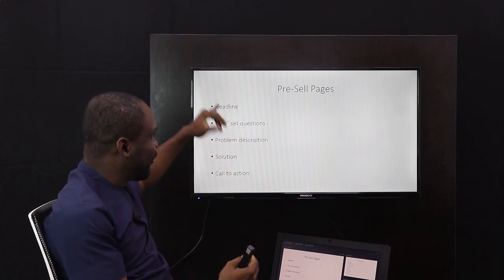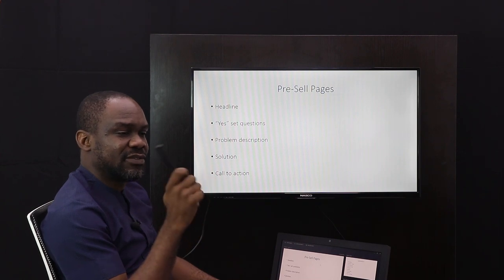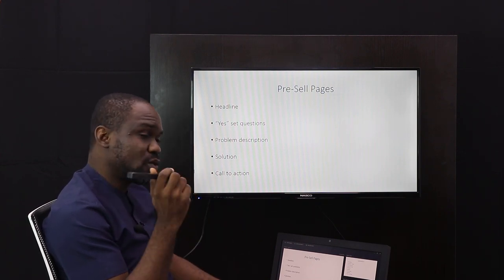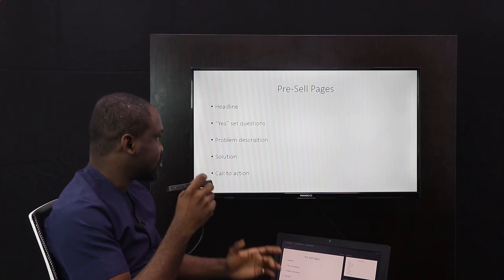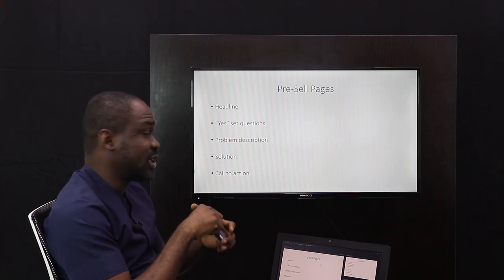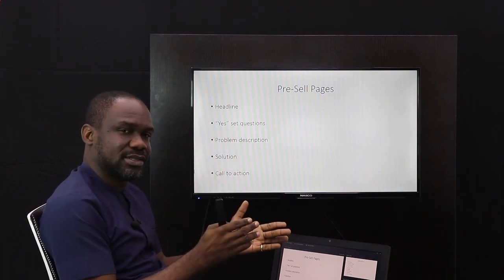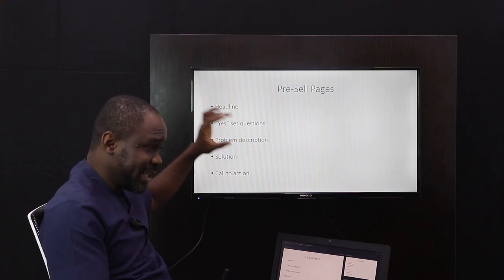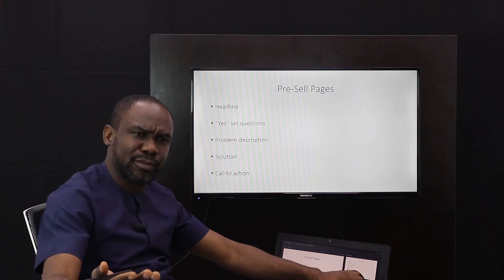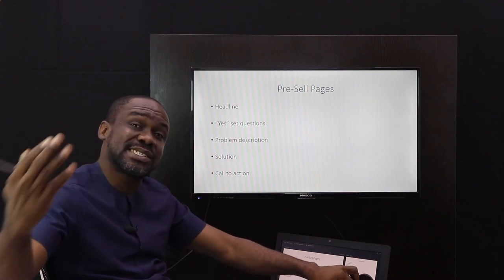A yes-set question is a question where the answer is definitely going to be yes. When you ask it, you already know the answer. So if the headline is 'Are you short?' the yes-set question is 'Would you like to add three to five inches to your height?' Of course, if I'm asking short people that question, the answer is going to be yes. That is a yes-set question.